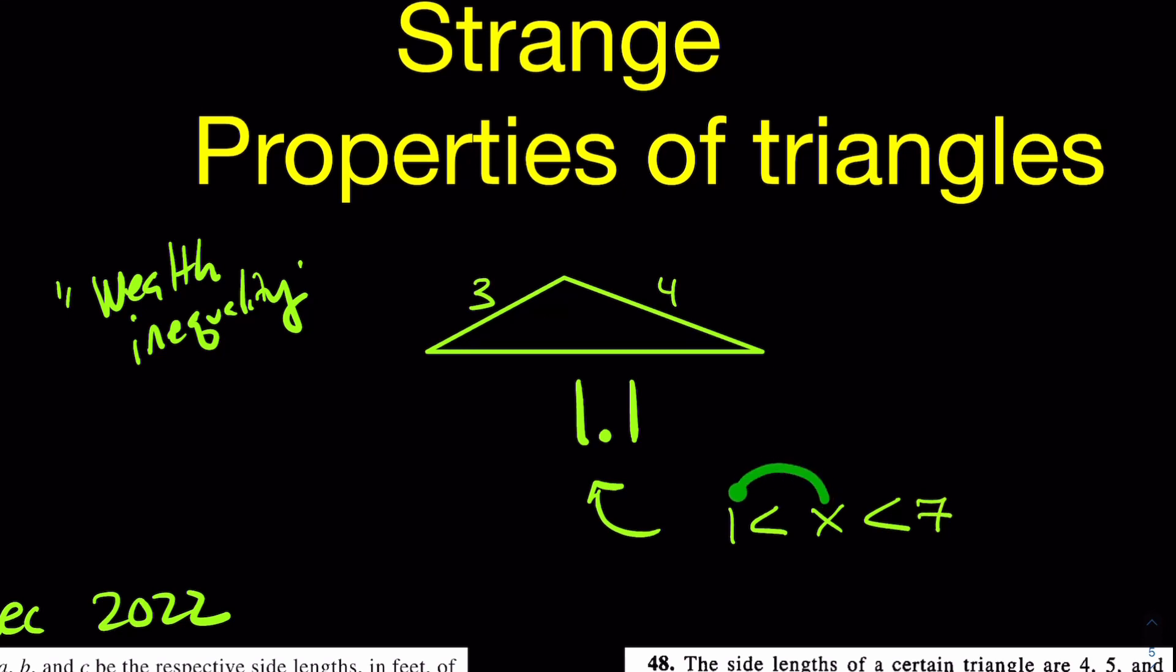Again, x must be bigger than 1, but also x is going to be less than 7 for this side. And that's the idea of wealth inequality, at least in accordance with geometry.